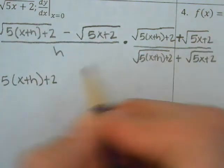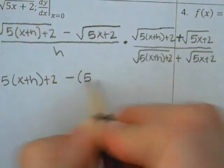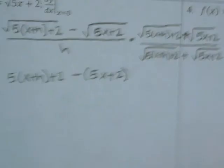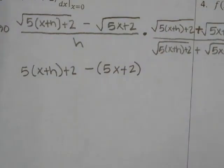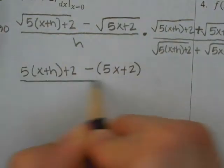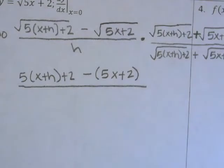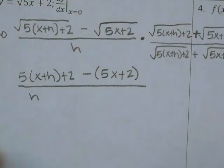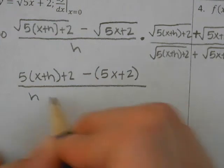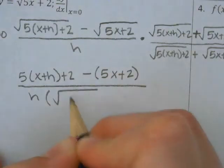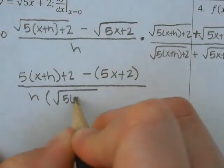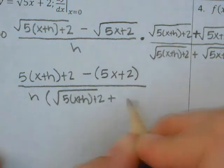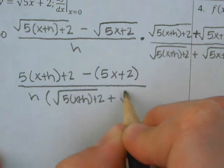Minus (5x+2) is all being subtracted, so it has to go in parentheses. And then for the bottom, put an h, and then all the other stuff — and I leave it. Anyone remember why I leave it? The majority of the time, something's going to cancel and it's going to work out nicely.